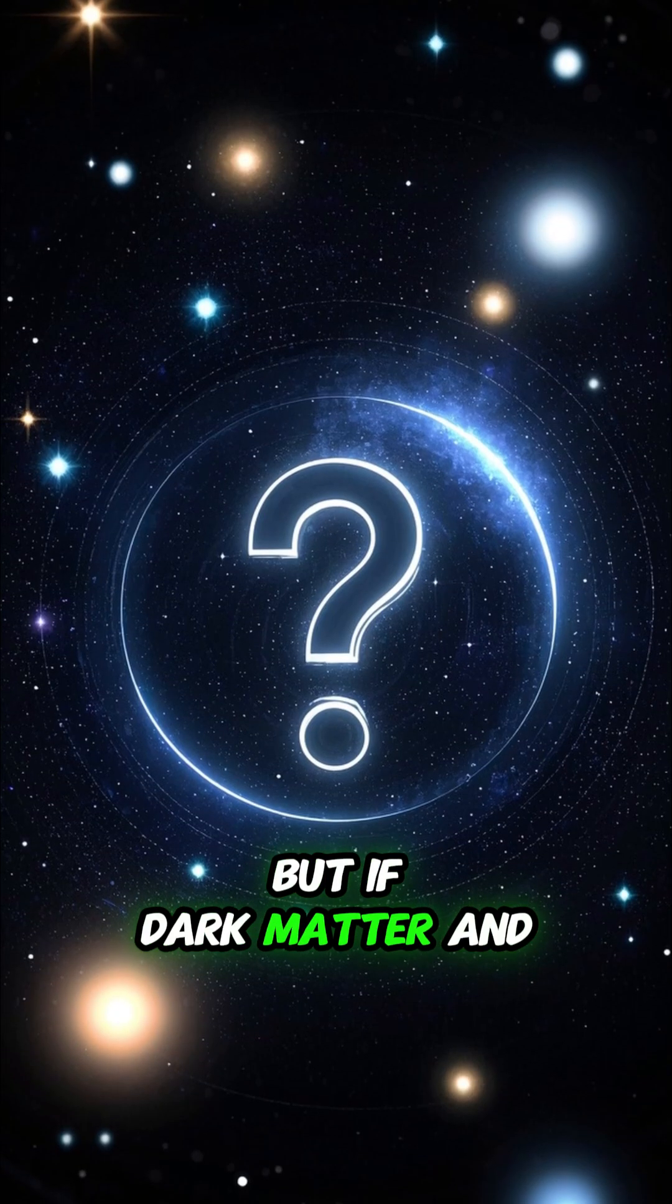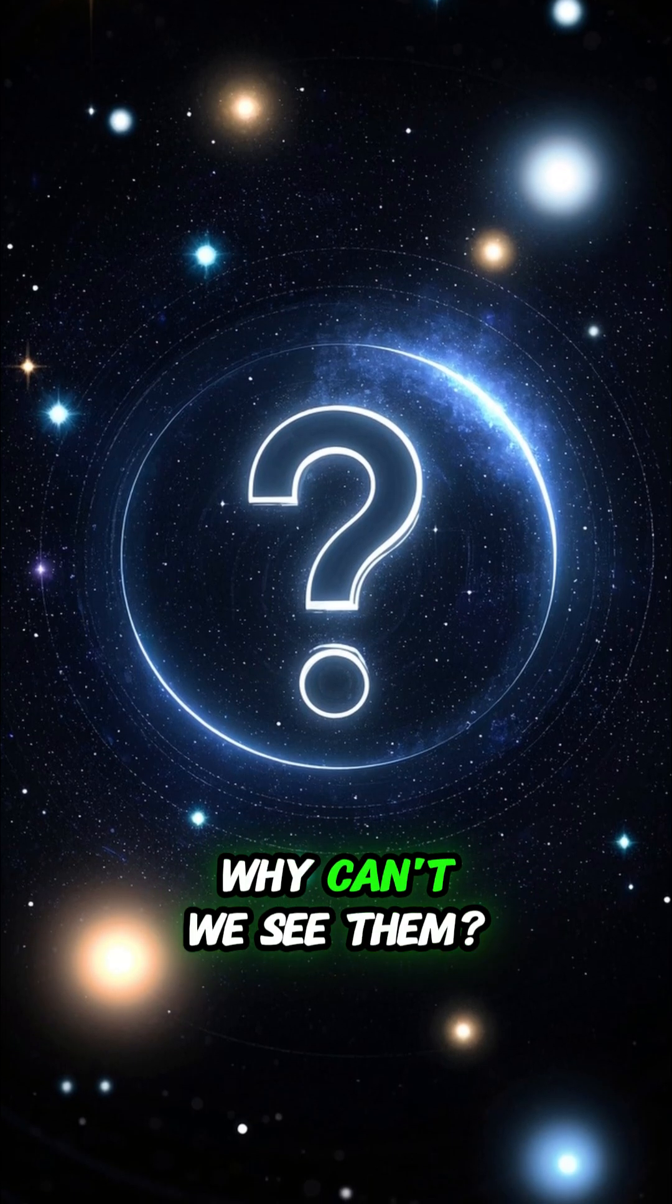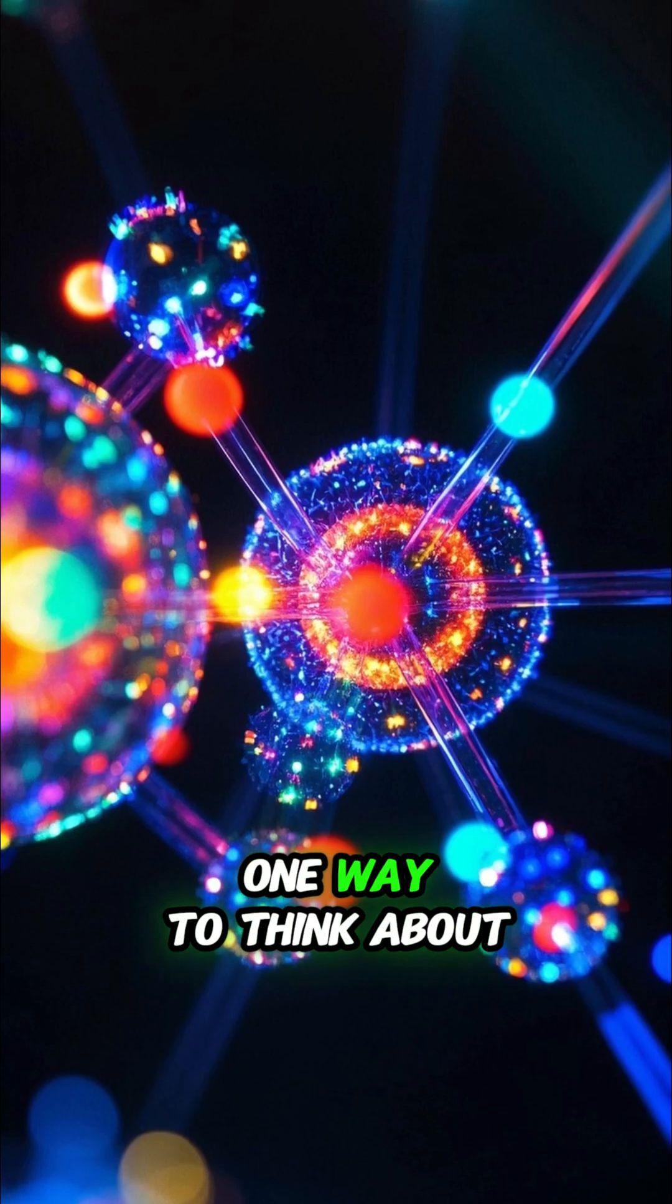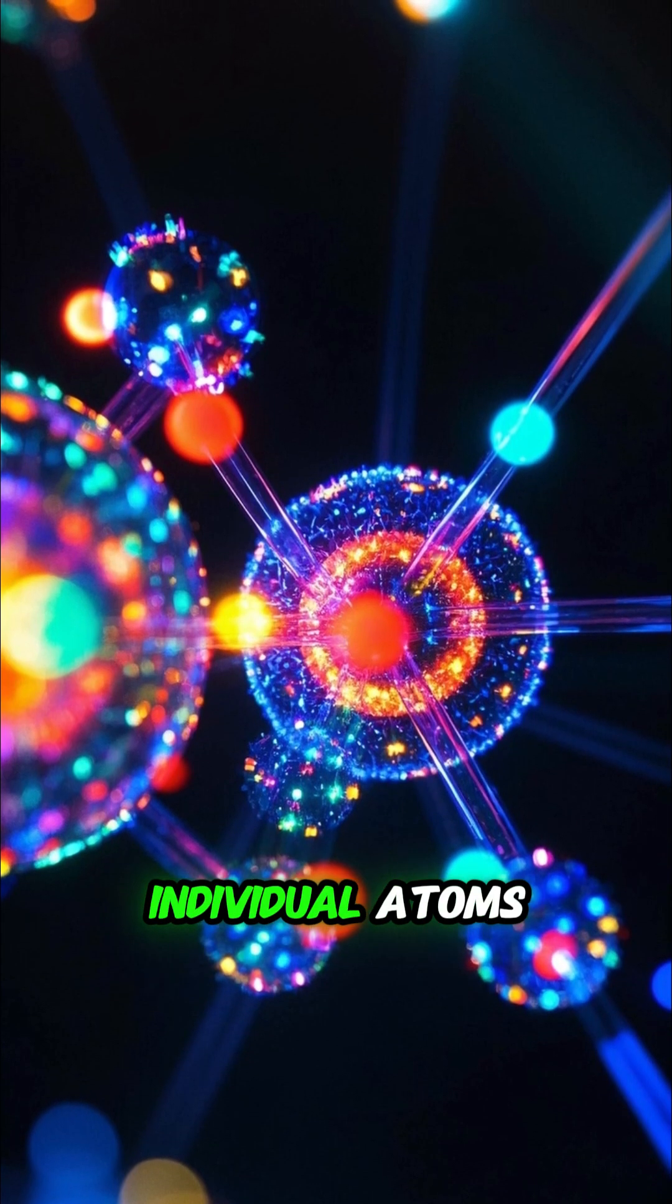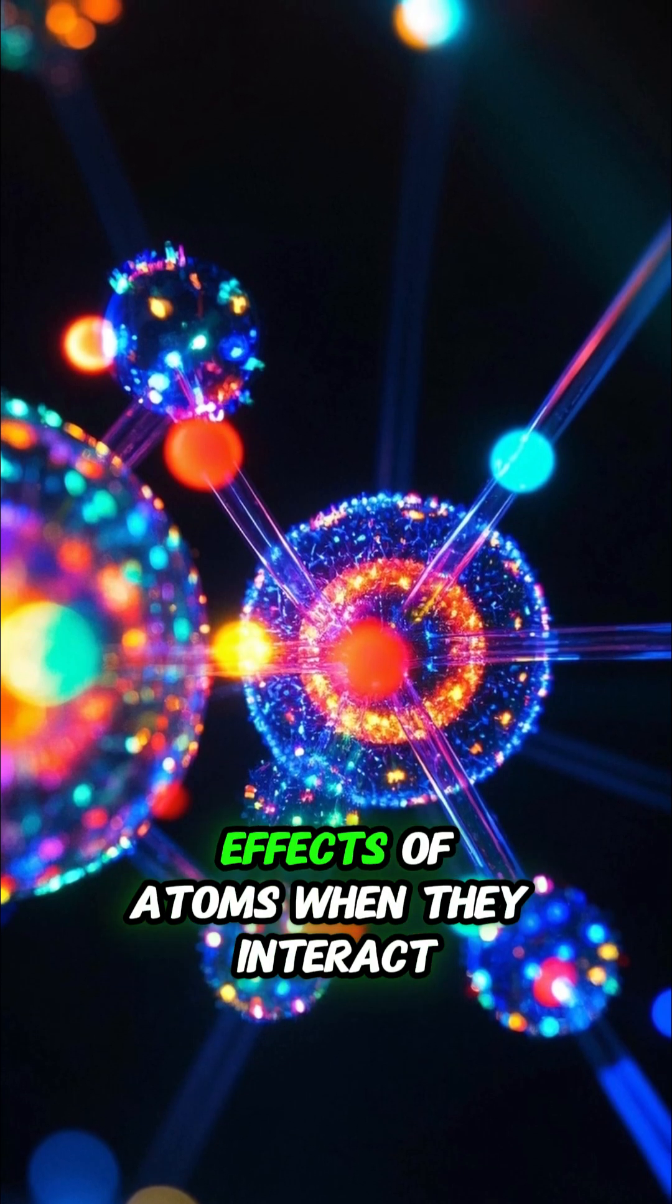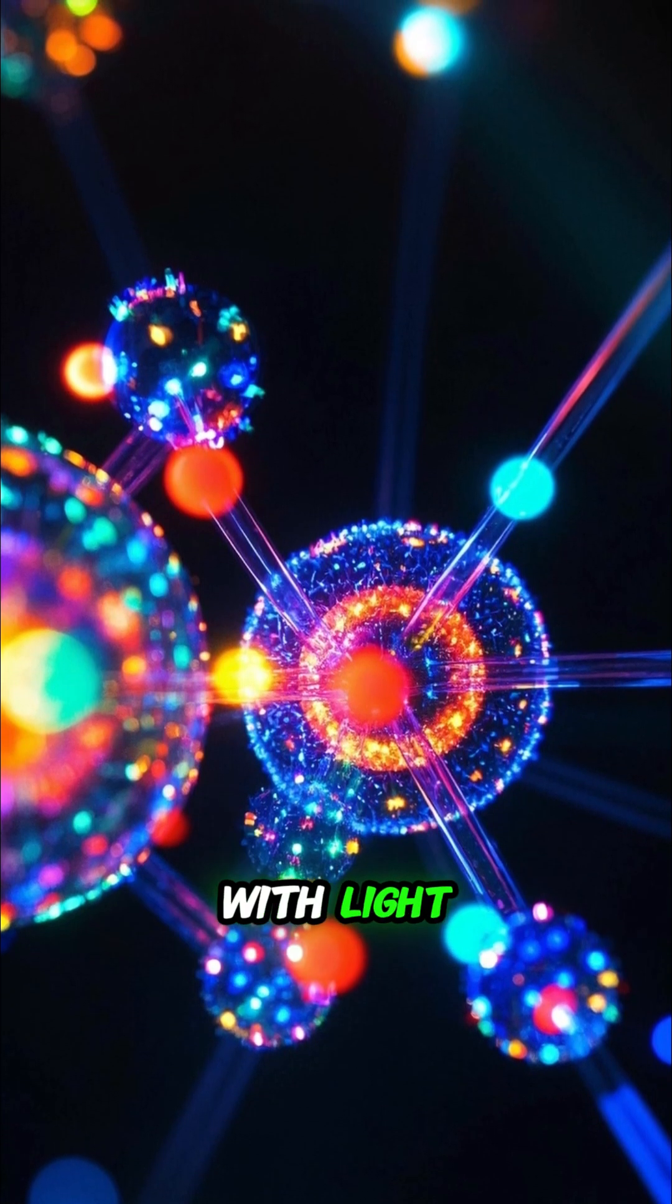But if dark matter and dark energy are so abundant, why can't we see them? One way to think about it is that you can't see individual atoms, but you can see the effects of atoms when they interact with light.